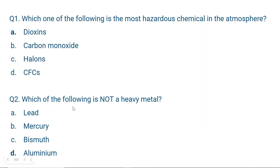Question number two: Which of the following is not a heavy metal? Lead is a heavy metal, mercury is a heavy metal, bismuth is a heavy metal, but aluminium is not a heavy metal — aluminium is lightweight. Iron has atomic number 26, bismuth is 83, lead is 82, and mercury has atomic number 80. All these metals are heavier than iron, except aluminium, which has a very low atomic weight and low specific gravity. That's why aluminium is used in aeronautics.